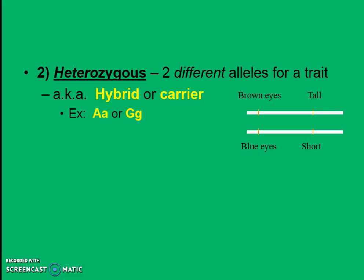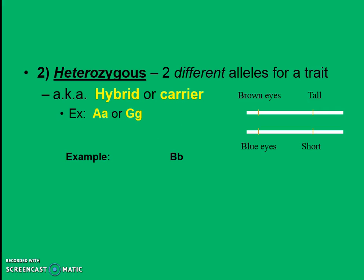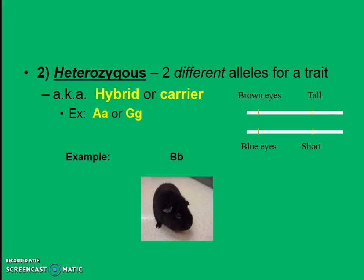The opposite of homozygous is heterozygous. This is where I have two different alleles for the trait. We can call this a hybrid or a carrier. This is the form when I have one uppercase letter and one lowercase letter — one dominant and one recessive. Dominant things are always visible, so the uppercase letter will overshadow the other one. In my guinea pig example, big B little b — that guinea pig is going to look black, because the little b, the white fur, is hidden or masked. The white fur DNA is in there, but we can't see it.